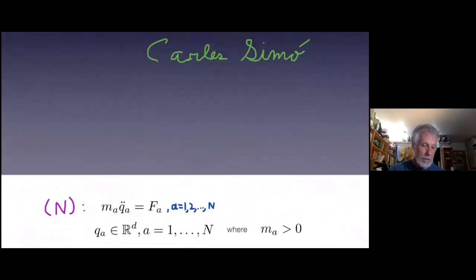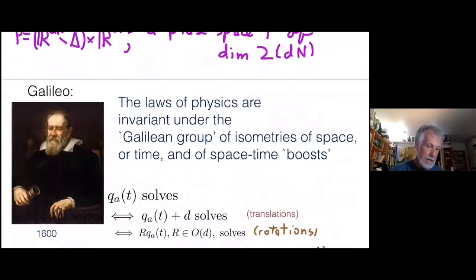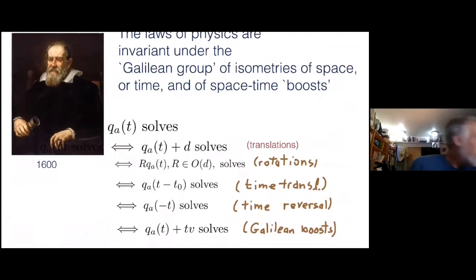Galileo came before Newton. Newton was in the 1600s. He wrote down the equations. It's kind of typical physics. You know, the symmetry before the equations. Newton explicitly wrote down his equations to be invariant under the Galilean group. Here's the Galilean group: spatial isometries, so translations and rotations; time isometries, so time translations and time reversal; and one symmetry that mixes space and time, the Galilean boosts.